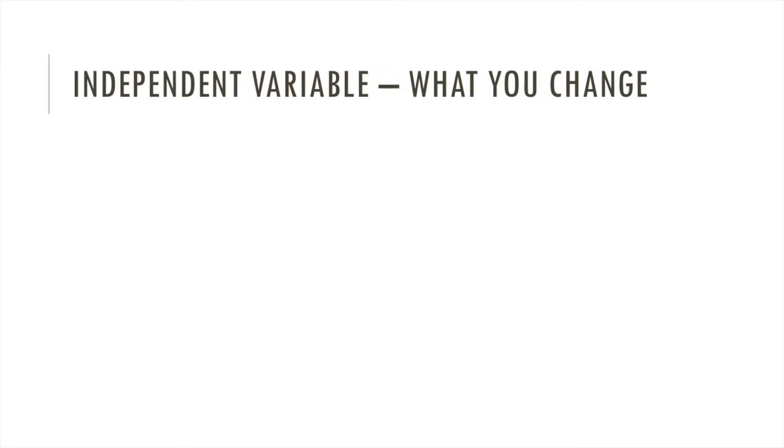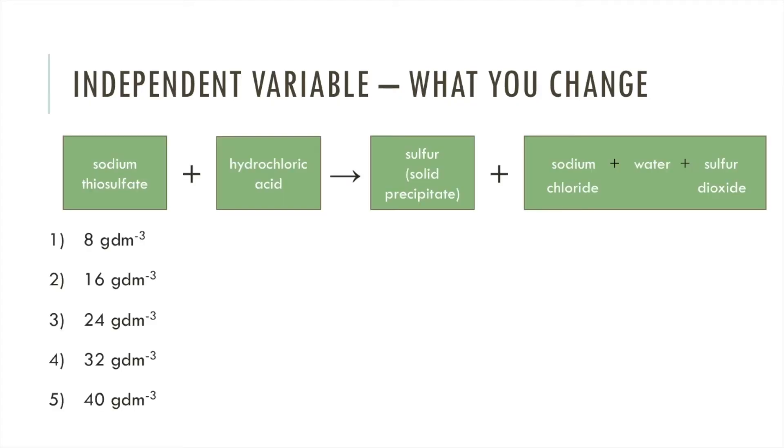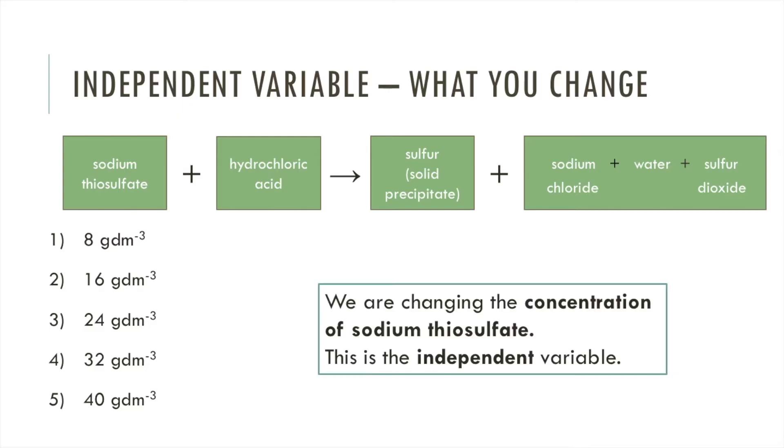The independent variable in a reaction is the thing that you change, and you should only be changing one thing at a time. If we look back at our reaction, we can see we are changing the concentration of sodium thiosulfate. So this is our independent variable.